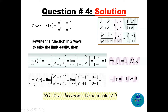For the limit as x goes to minus infinity, use (e^(2x) - 1) / (e^(2x) + 1). Here e^(2·minus infinity) = 0, so the limit is (0 - 1) / (0 + 1) = -1. Therefore y = -1 is another horizontal asymptote. There are no vertical asymptotes because the denominator cannot be zero for any value of x.